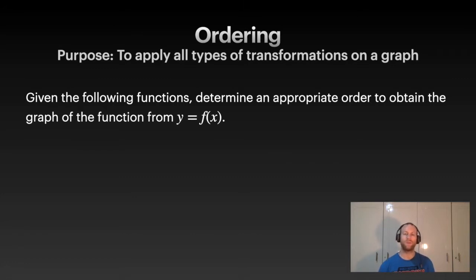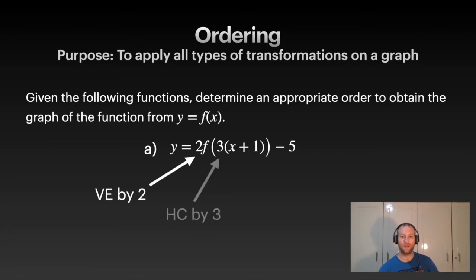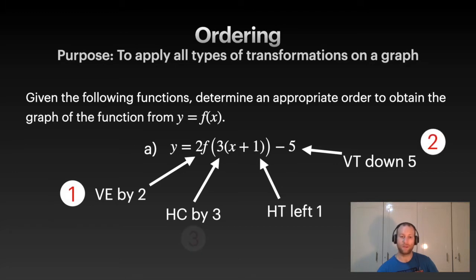Given the following functions, I'm gonna give you two of them. We want to know what is the appropriate order to attain the graph. You've seen lots of ordering questions, this should come as no surprise, but I'm gonna go over two really quick just to make sure it's solidified. What you do is label each of the numbers—what do they do, how do they change your graph—and then number them either vertically first or horizontally first. So I did vertical, there's your order.